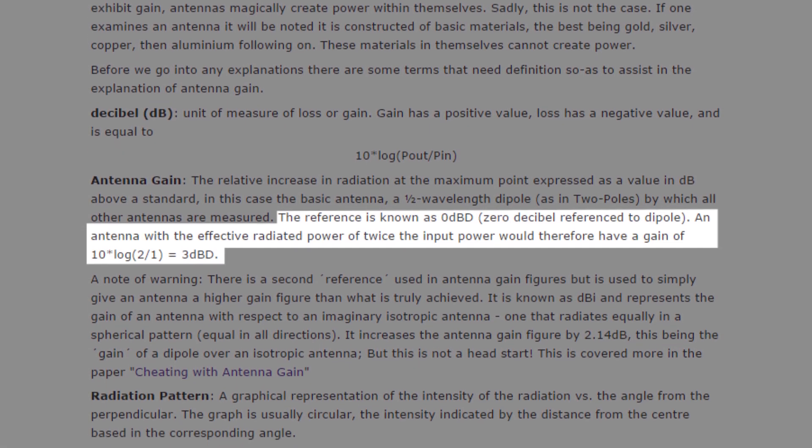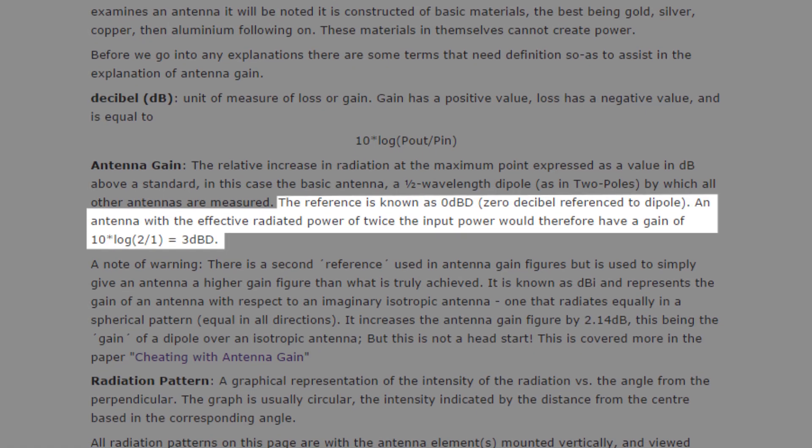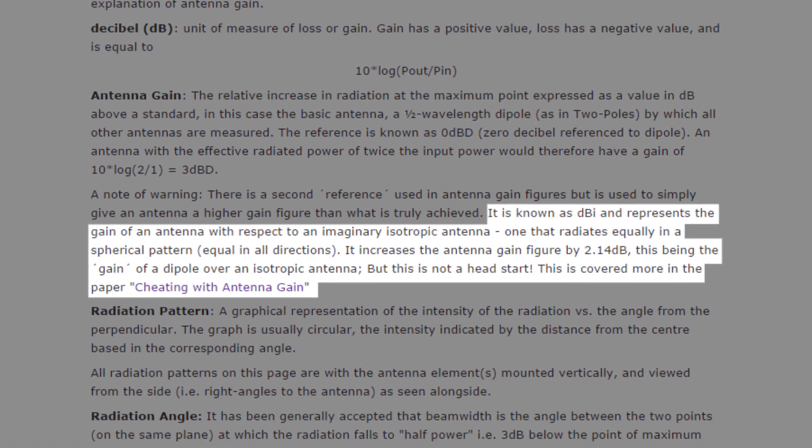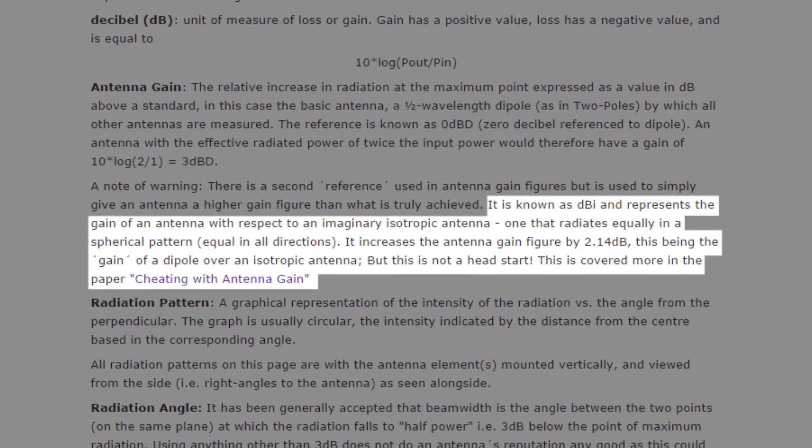In the case of an antenna's gain, reputable companies will rate them in dBd, or relative to a dipole, while companies who want to show inflated numbers will rate in dBi, relative to an imaginary antenna that radiates in all directions.